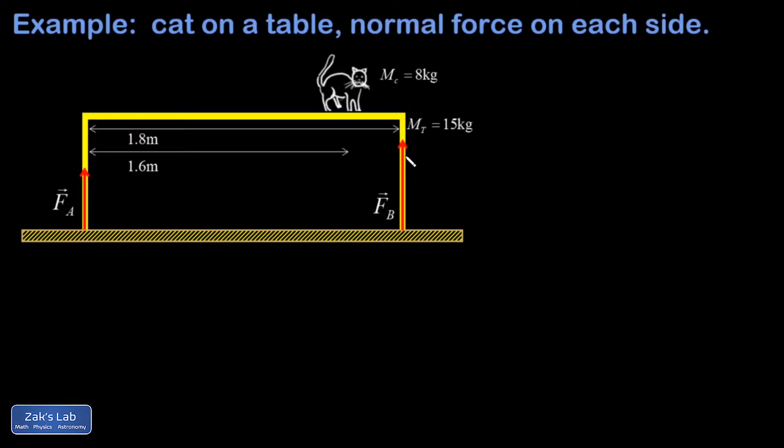One point about this that you can ignore is that obviously tables don't just have two legs, but the force I'm computing here would be split evenly between the two legs on this side and the two legs on this side, so we don't have to worry about that. Just find the total force exerted upward on the left and on the right.